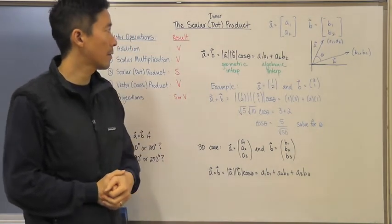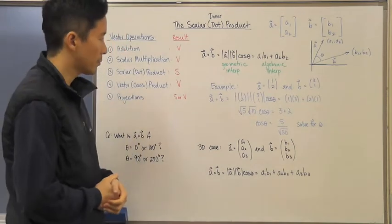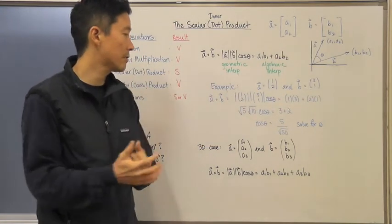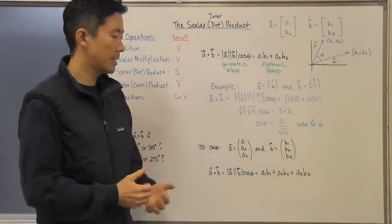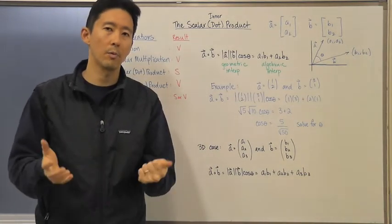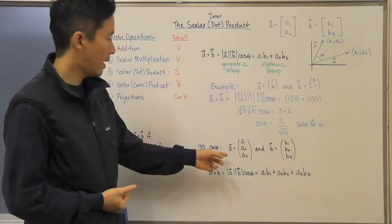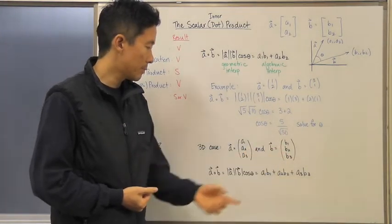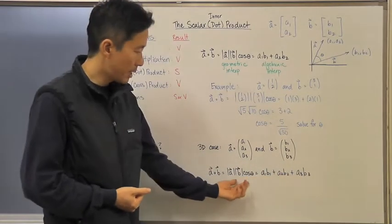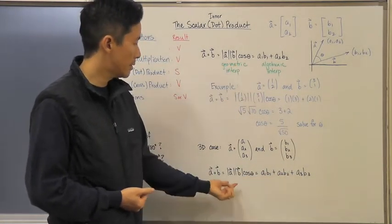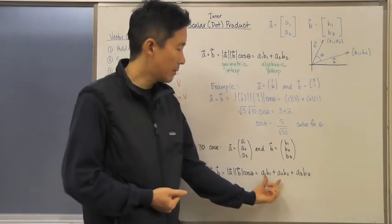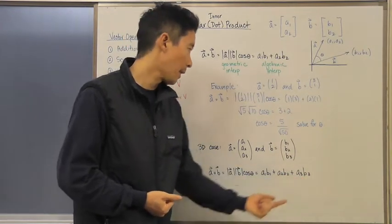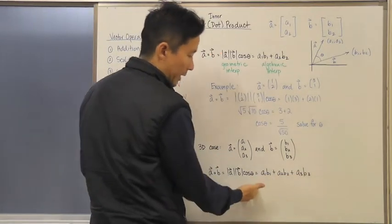We also want to look at the three-dimensional case, since we deal with both 2D and 3D vectors. The scalar product is exactly the same, except we have one more component in the k direction. So vector a is (a1, a2, a3) and vector b is (b1, b2, b3). The geometric interpretation is identical, and the only difference algebraically is that we add the extra term a3 times b3.